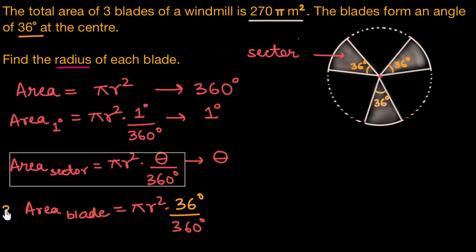If we multiply it by 3, we'll get the total area of the 3 blades. Let me multiply it onto this side as well. This total area is given to us as 270π m².